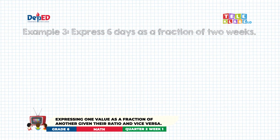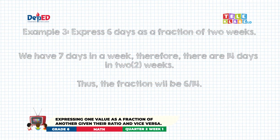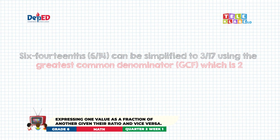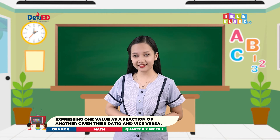Example number three: Express six days as a fraction of two weeks. Before expressing six days as a fraction of two weeks, let us change weeks into days to make the units similar. We have seven days in a week. Therefore, there are fourteen days in two weeks. Thus, the fraction will be six-fourteenths. Six-fourteenths can be simplified to three-sevenths using the greatest common factor, which is two.